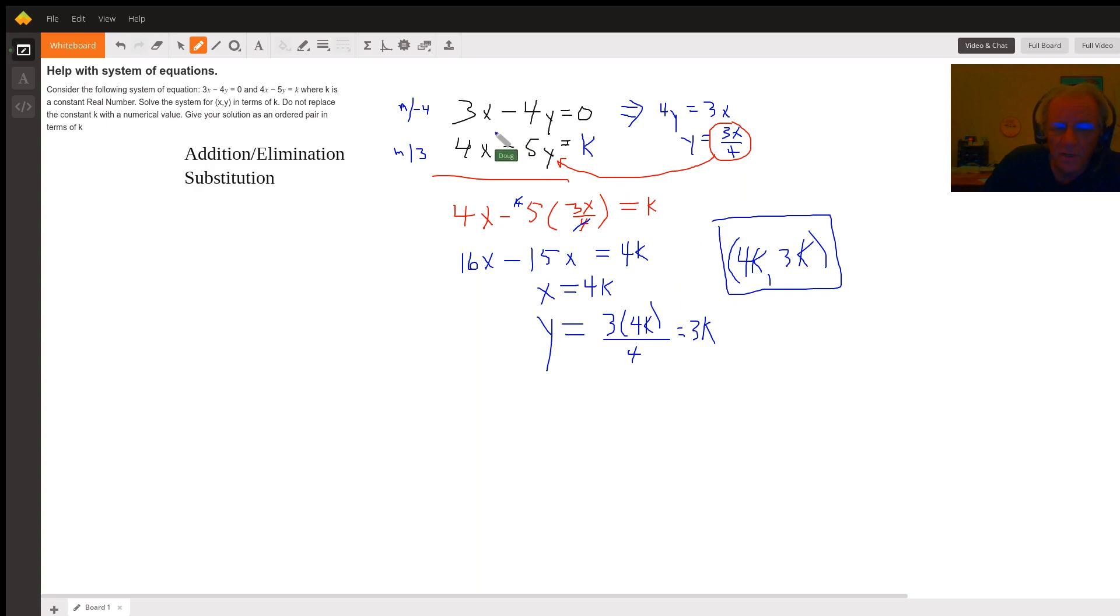Try substituting 4k in for x, 3k in for y, and see if you get true statements for both equation one and equation two. I'm sure you'll see that does indeed prove to work.